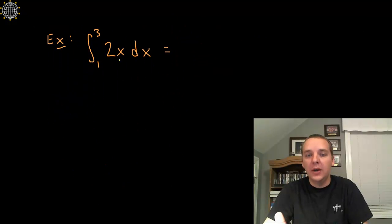If we wanted to integrate 2X, let's say from 1 to 3, we take our anti-derivative and we put a plus C, X squared plus C, bracket with a 1 and a 3.